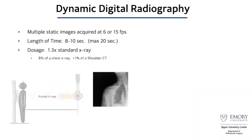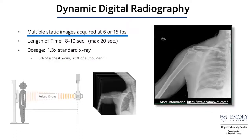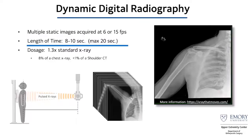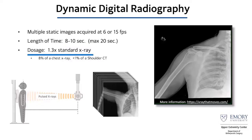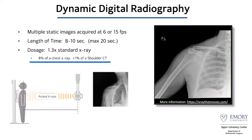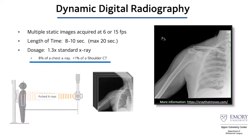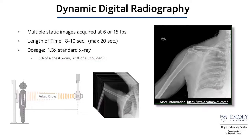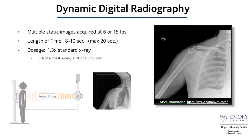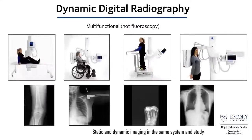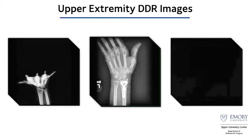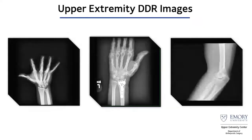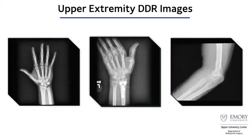DDR is basically multiple static images acquired at either 6 or 15 frames per second, over approximately 8 to 10 seconds, with an average dosage only about 1.3 times greater than a standard x-ray — much less than a chest x-ray or CT. It's multifunctional; you can utilize it in multiple different joints. I'm an upper extremity surgeon specializing in complex pathologies from the shoulder to the fingertip, and this dynamic DDR has really helped us reevaluate a lot of these pathologies.